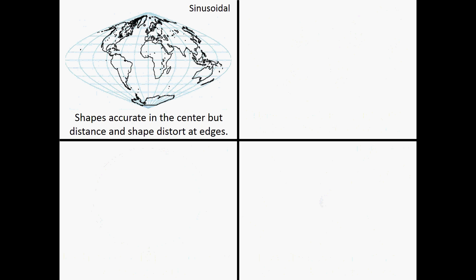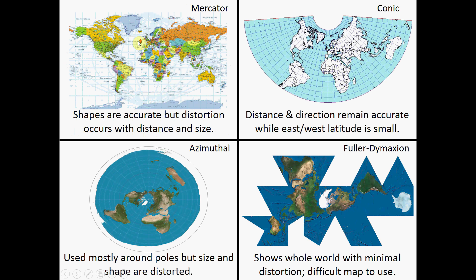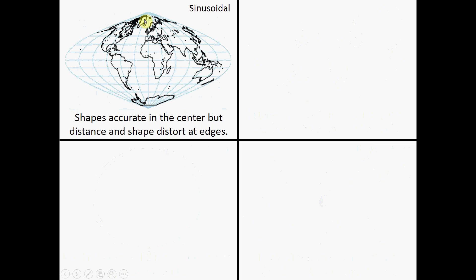Sinusoidal is number five. They kind of pinch it to make it like a children's top and keep the center of the map accurate. Most of these maps try to keep the center fairly accurate while the poles are where we really struggle. With Mercator they stretch the poles out; this one kind of pinches them in — so it's either too much or too little.